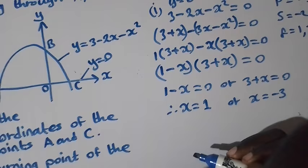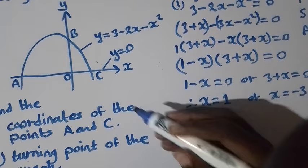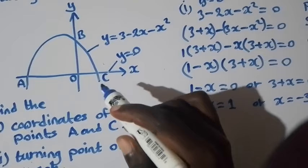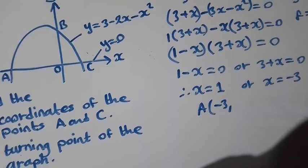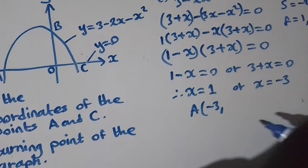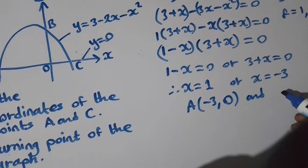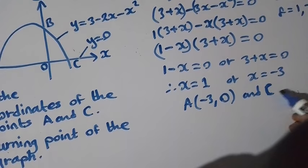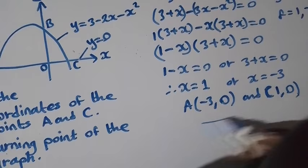Now we have the zeros of x. Checking the diagram, point A is located on the negative side and point C on the positive side. So coordinate A is (-3, 0) and coordinate C is (1, 0). These are the coordinates.